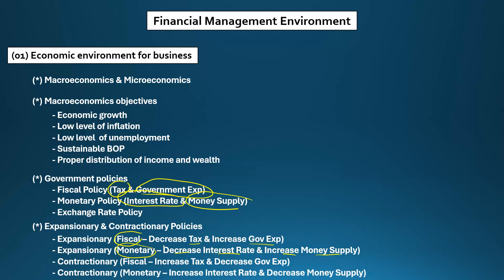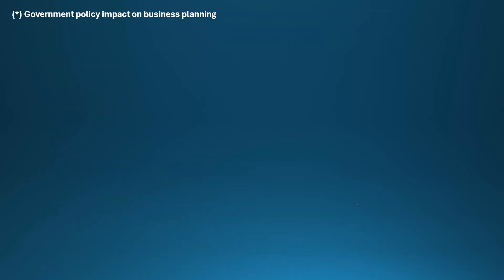Contractionary policies mean you are reducing or shrinking economic activities. Contractionary fiscal and monetary policies are the other way around from expansionary. Contractionary fiscal policy involves increasing taxes and decreasing government expenditure. Contractionary monetary policy involves increasing interest rates and decreasing money supply.